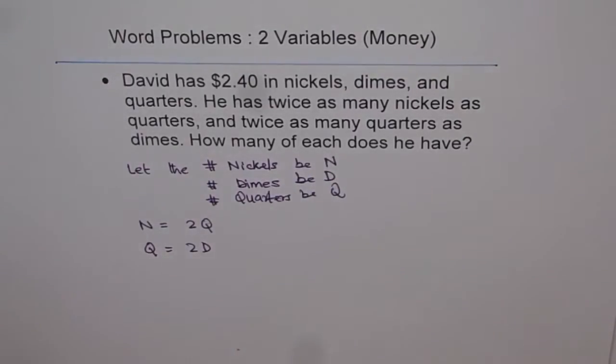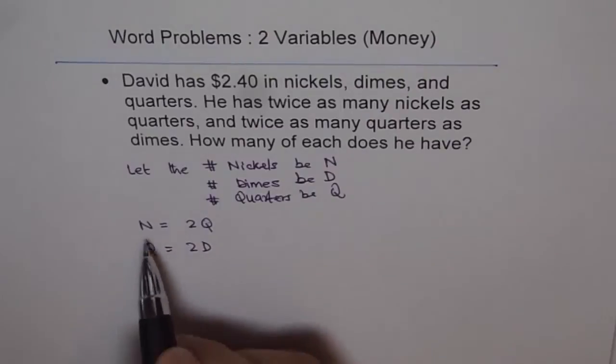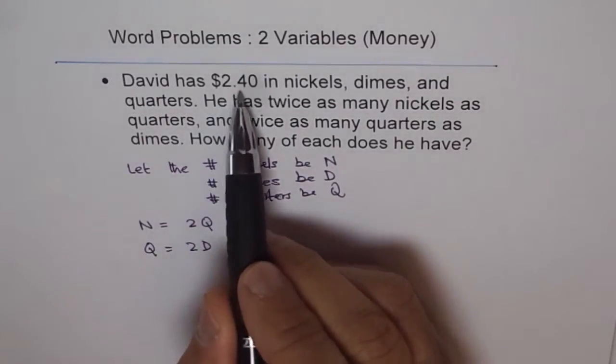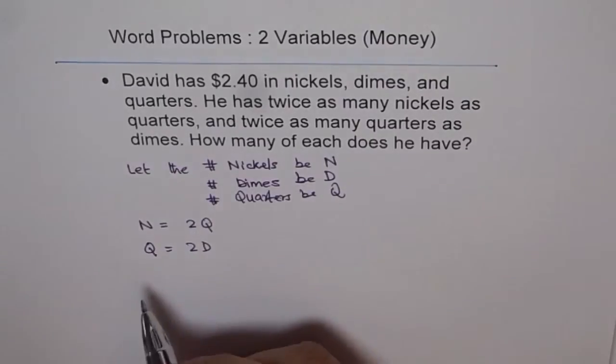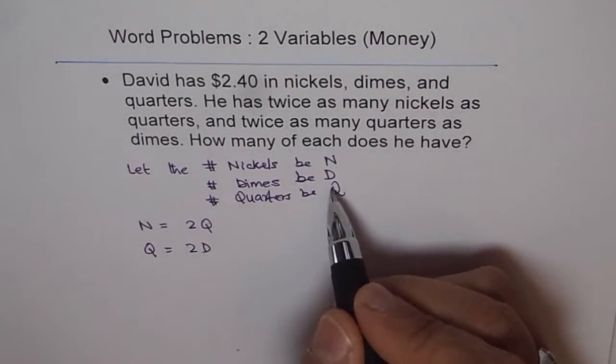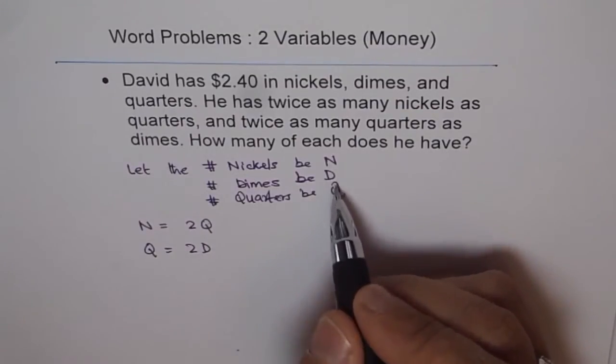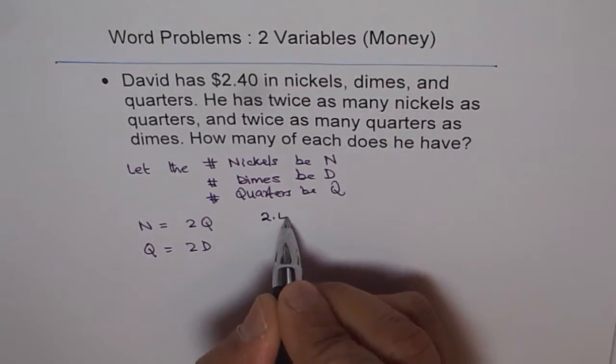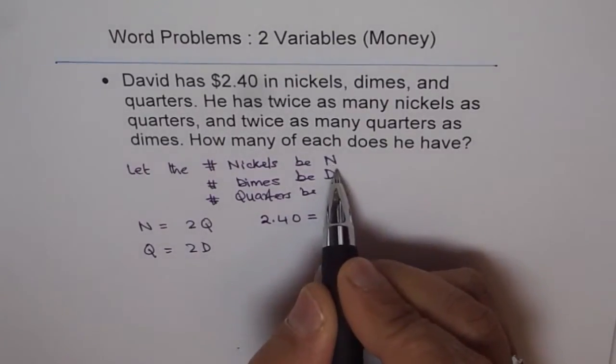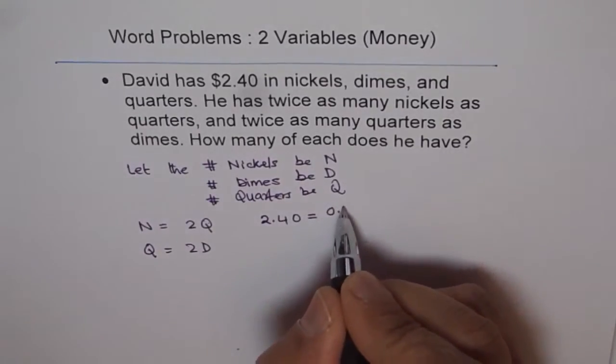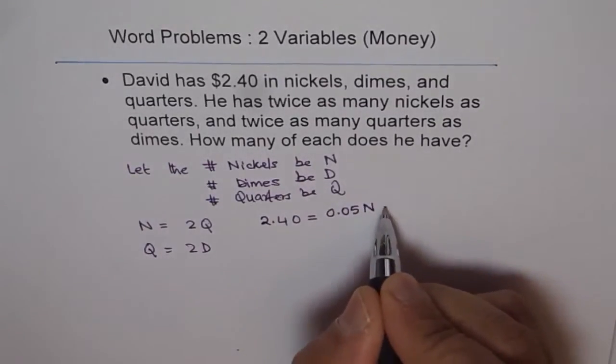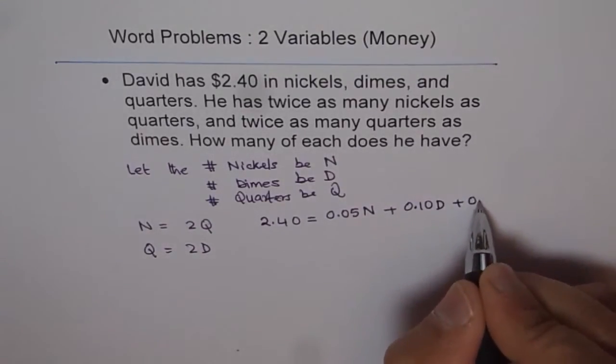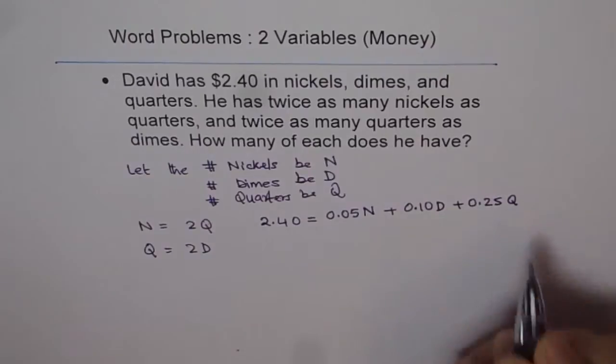How many of each does he have? That is what we need to find. Now if there are N nickels, D dimes and Q quarters, how much money will that make? It should make $2.40. So let us write down this equation: 2.40 equals 0.05 times N plus 0.10 times D plus 0.25 times Q. So that is how we get our equation.